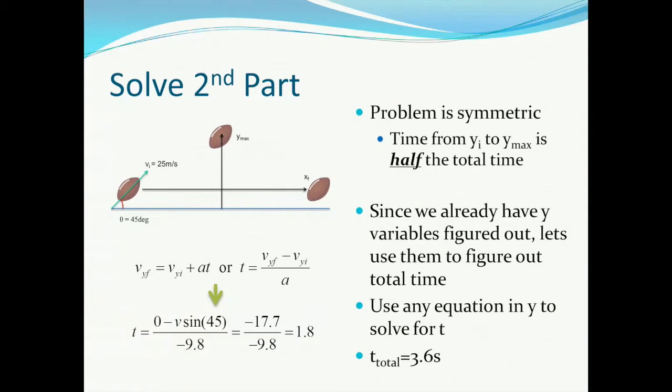Next, we identify that the problem is symmetric. We just solved for the maximum height, but by symmetry, this means exactly half the trip that the football takes. Therefore, the time from y initial to y max is half the total time. Since we already have all the variables in the y direction except for time, we can pick any equation we want in the y direction to solve for time. This will be time for half the journey. The simplest equation to choose is that the final y velocity is equal to the initial y velocity plus gravity multiplied by time. We rearrange for time and get an answer of 1.8 seconds.